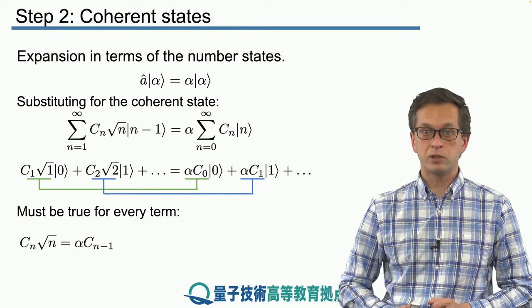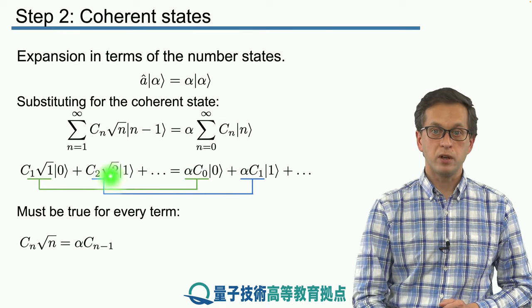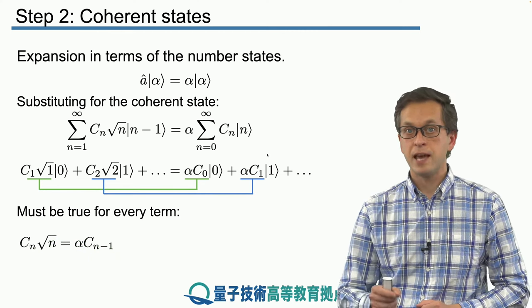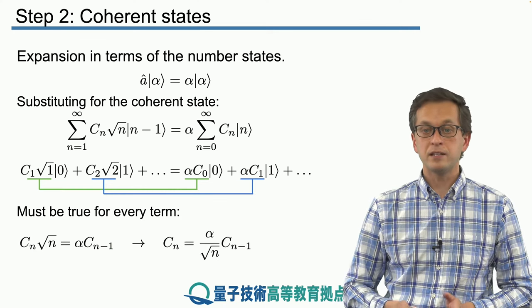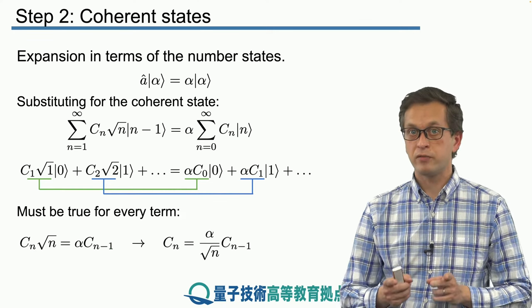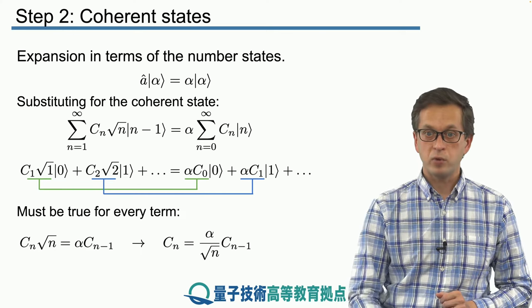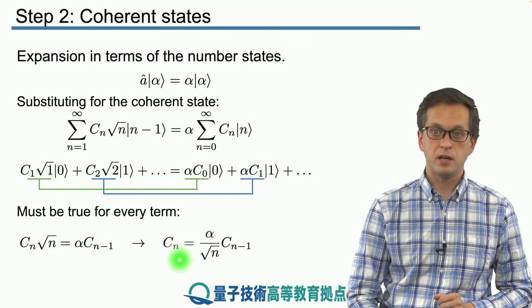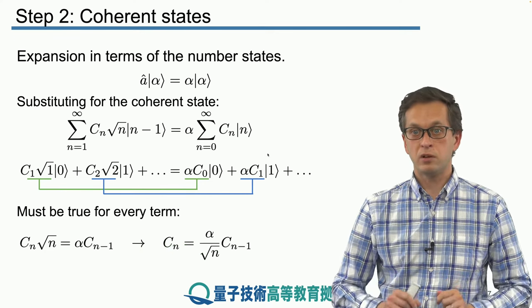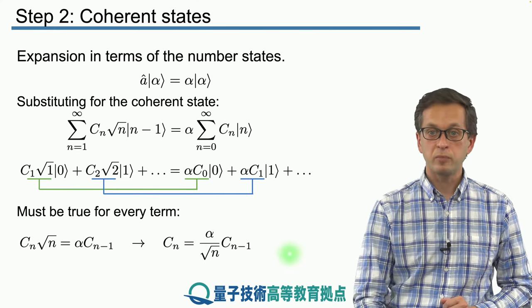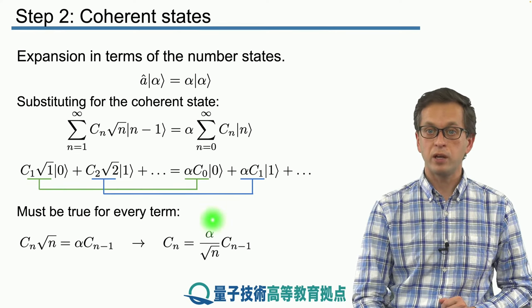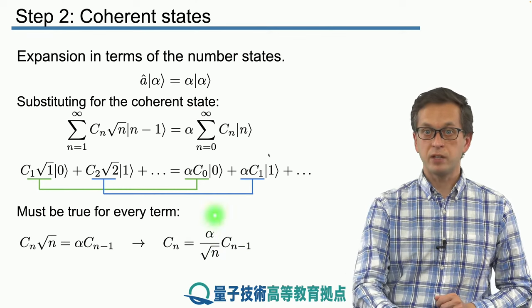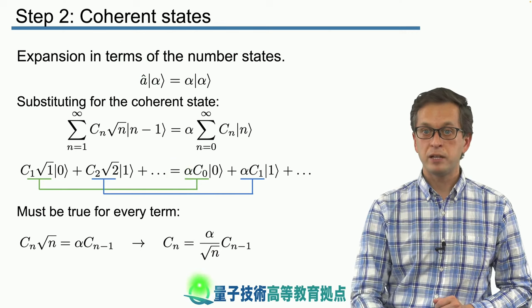Therefore, we can write the following recursion relations. We've got from the left hand side, we've got the Cn times square root of n must be equal to alpha times Cn minus 1. And this is a general recursion relation which is satisfied for coherent states. So we can obtain the value of the probability amplitude for the term n, which is Cn, in terms of the amplitude for a lower number state. Cn minus 1 by multiplying it by this following fraction. Alpha, which is the complex eigenvalue coming from this eigenvalue equation, divided by square root of n.